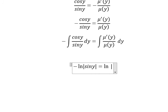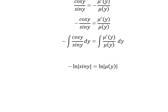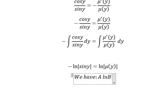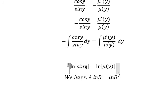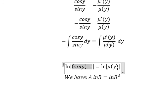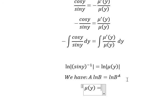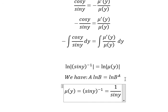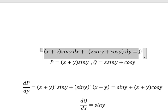We take the natural log of the absolute value of μ(y). The negative goes inside using the logarithm power rule, giving sin(y) to the power of negative one. Simplifying, μ(y) equals 1 over sin(y), so we multiply both sides by 1 over sin(y).